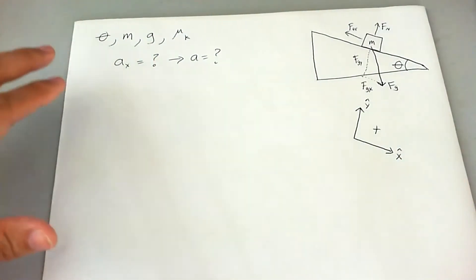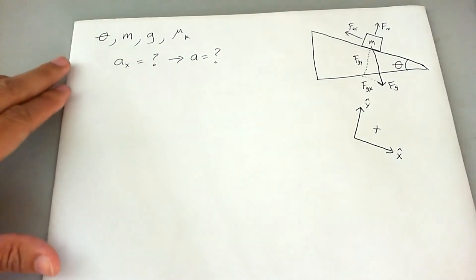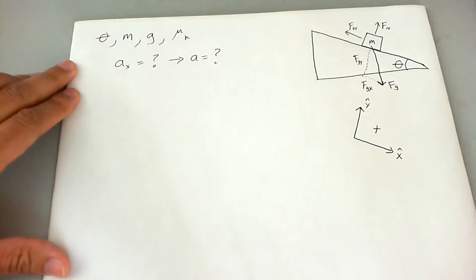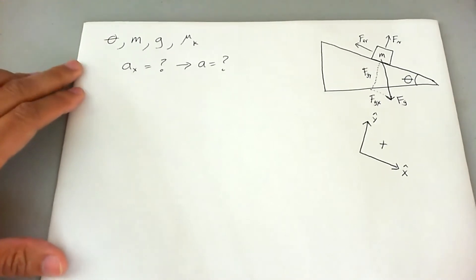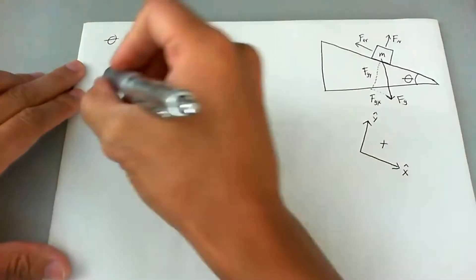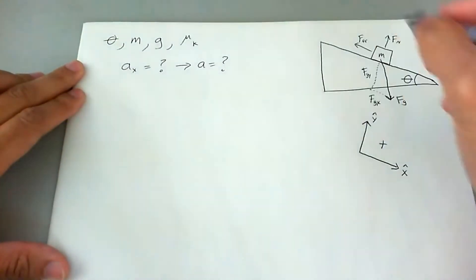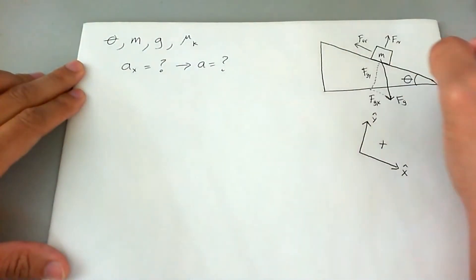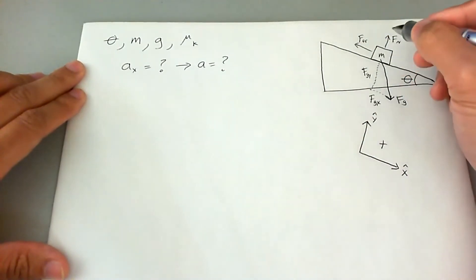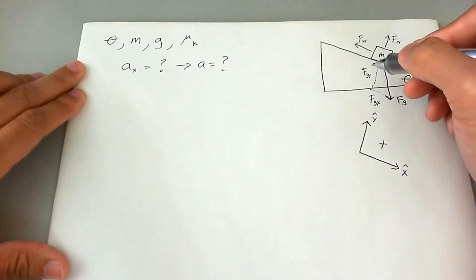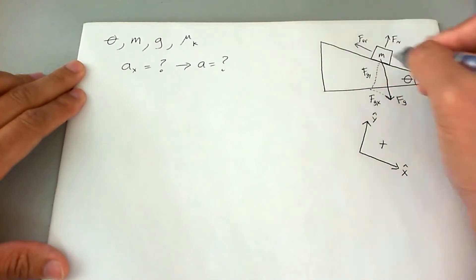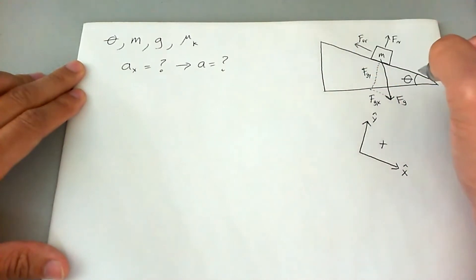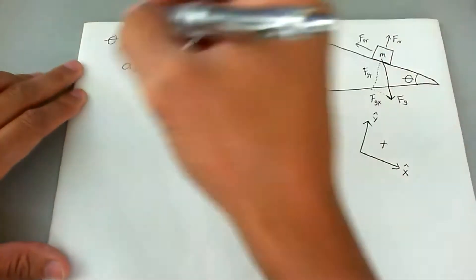Our goal is to find the acceleration. Let's implement Newton's second law to do this. We're going to implement it in the x direction, and if we need to, we might also implement it in the y direction. Keep in mind that the x direction goes top-left to bottom-right in this rotated coordinate system.